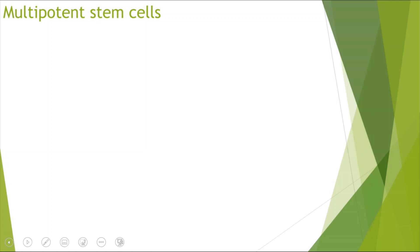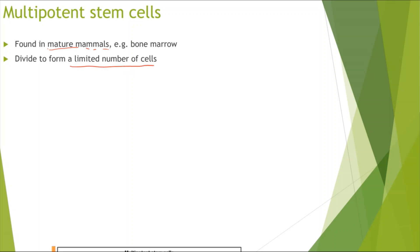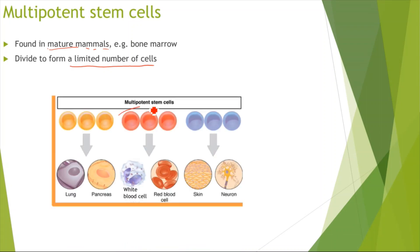Alright, so now looking at multipotent stem cells. And so these stem cells are found in mature mammals, so they won't be found in the embryos anymore. So for example they can be found in the bone marrow. However, they cannot divide to form any type of cell, they can only form a limited number of cells. So for example if these were my bone marrow cells, they can only differentiate into white blood cells and red blood cells. But they won't be able to differentiate into for example skin cells or urine cells. So they can only differentiate into a limited number of cells.